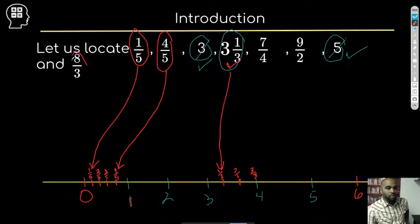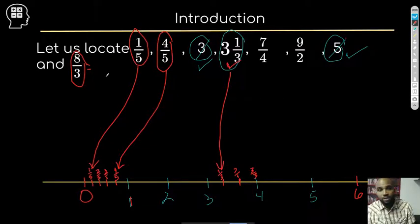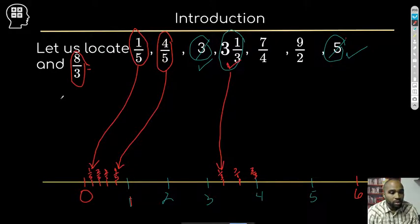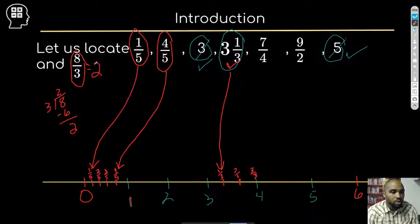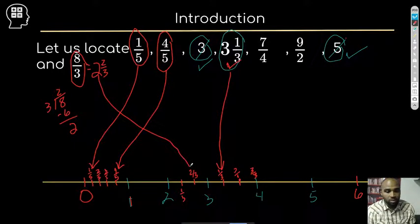Now we're left with the improper fractions. Where is eight thirds? The easiest thing to do to locate this one is to convert it into a mixed number. Eight divided by three: three goes into eight twice, giving six, and eight minus six is two. So eight thirds equals two and two thirds. I know it's going to be between two and three, so I'll break that space into thirds — two and one third, and two and two thirds. Two and two thirds is right there.